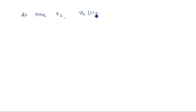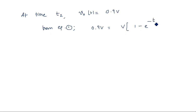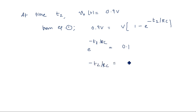Similarly, at time T2, V0(t) = 0.9V, since T2 is the instant where we have 90% of the maximum value. Substituting into equation 1: 0.9V = V × (1 − e^(−T2/RC)). V cancels, giving 1 − 0.9 = 0.1, so e^(−T2/RC) = 0.1. Therefore −T2/RC = ln(0.1), which is approximately −2.3. Thus T2 = 2.3 × RC.